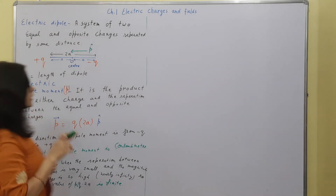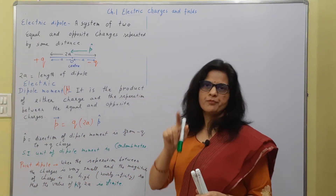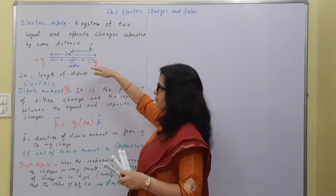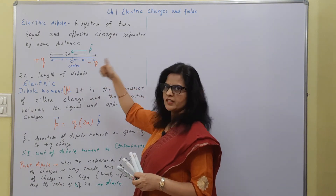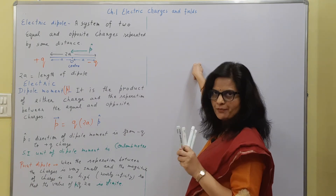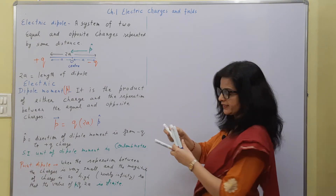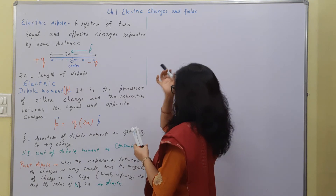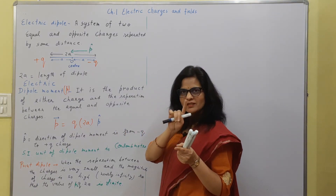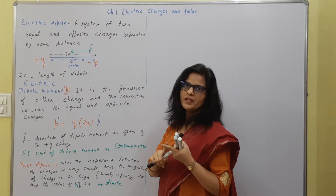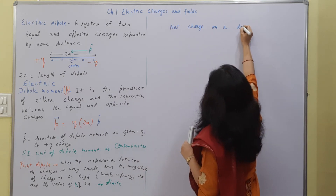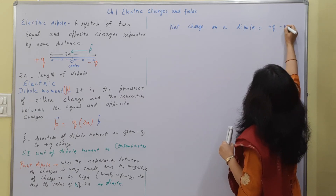We need to understand two specific positions for a dipole where we will calculate the electric field later on. There is a fixed electric field at every point around this dipole. Also, the net charge of the dipole is zero because it will be plus q plus minus q, since charges are algebraically added. So the net charge on a dipole is zero.